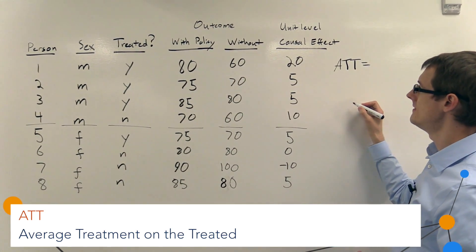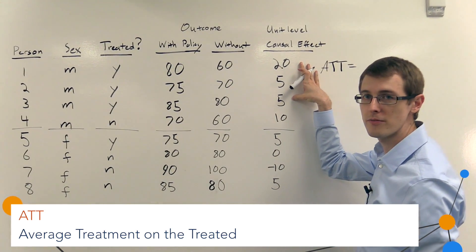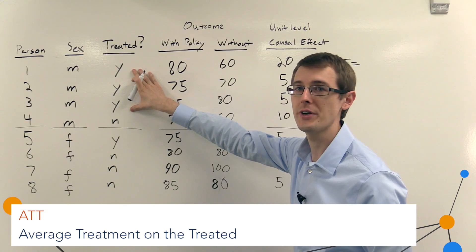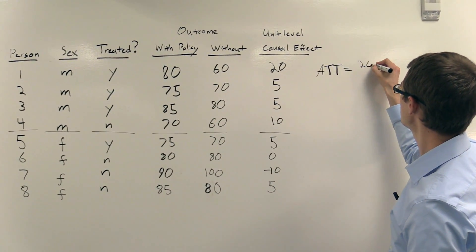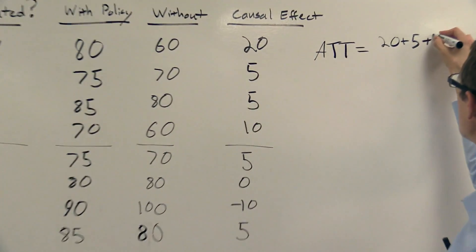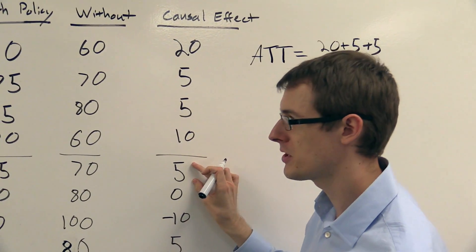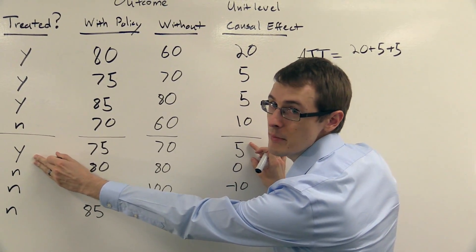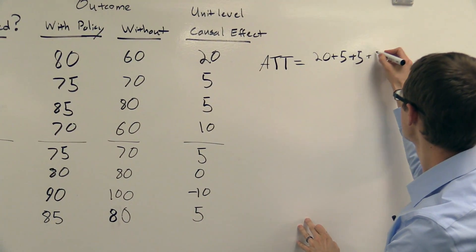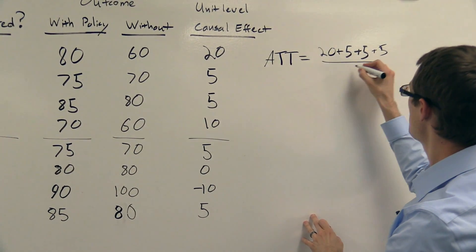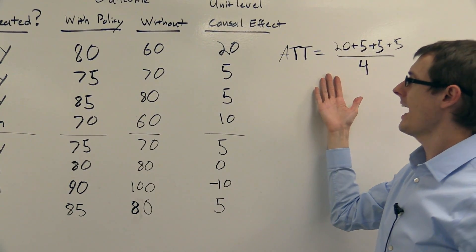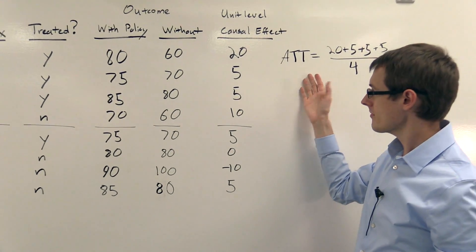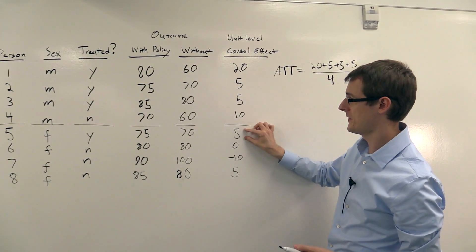is just the average unit causal effects for the people who were treated. So this person, this person, this person - that's 20 plus 5 plus 5. And then this person here, this one female who was treated, plus 5, divided by 4 people. So that's the average treatment on the treated.